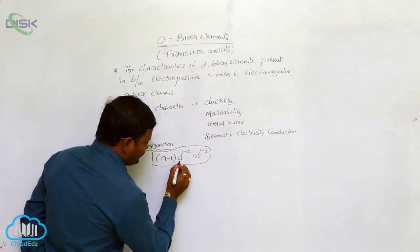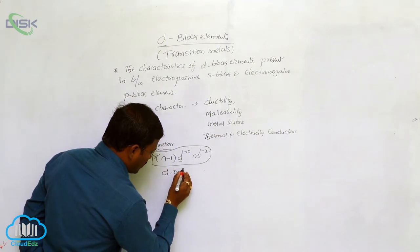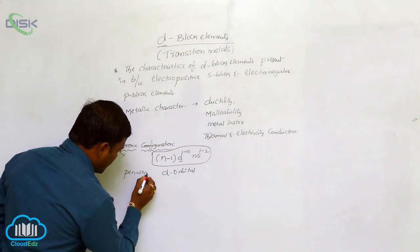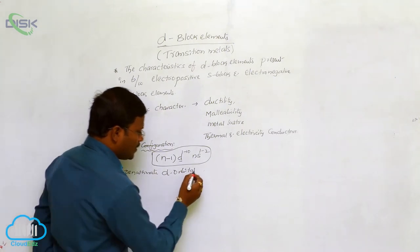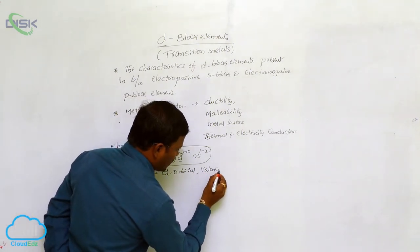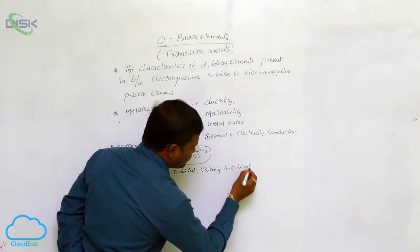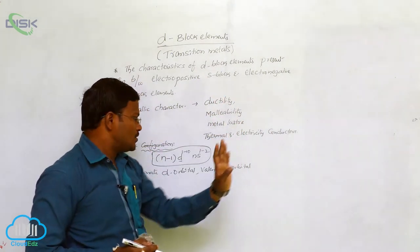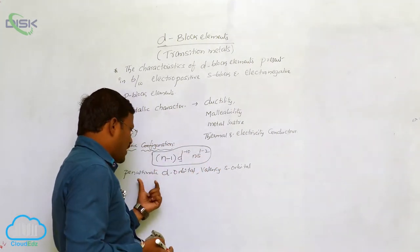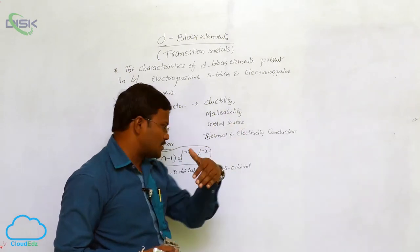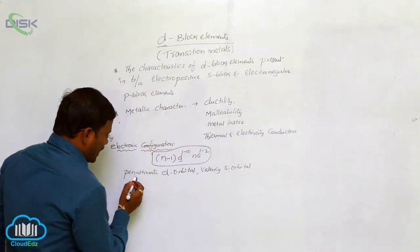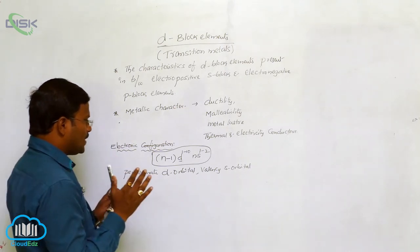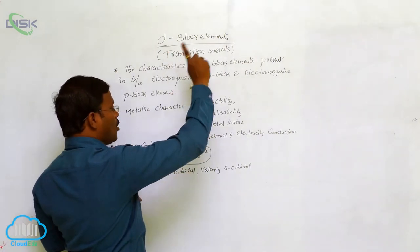Here the D block has the D orbital — the penultimate D orbital — with the valency S orbital present. The valency orbit means the last orbit present in an atom. The penultimate orbital means before the last orbital. The penultimate D orbital together with the valency S orbital gives us the electron configuration for D block elements.